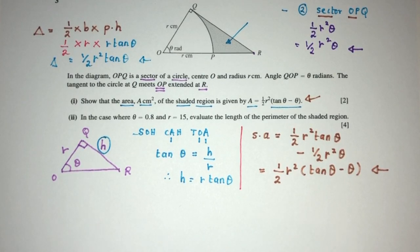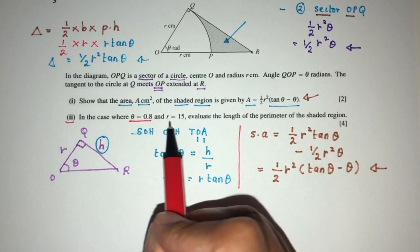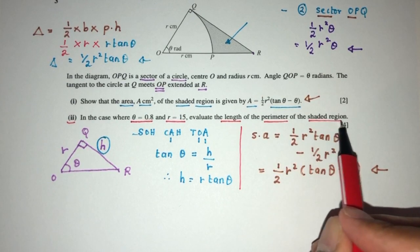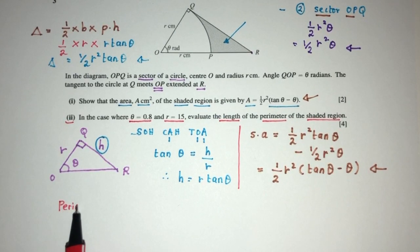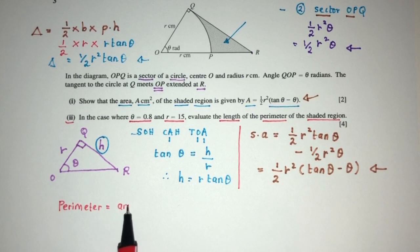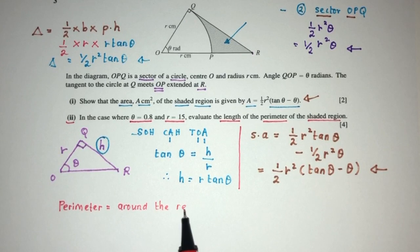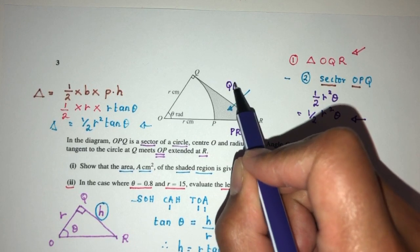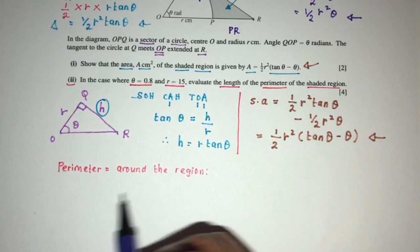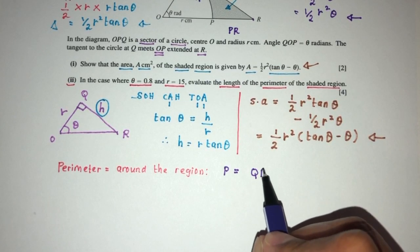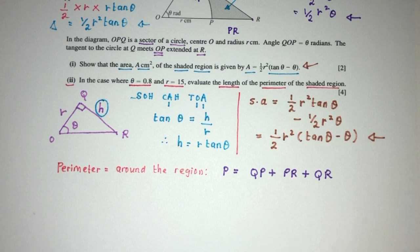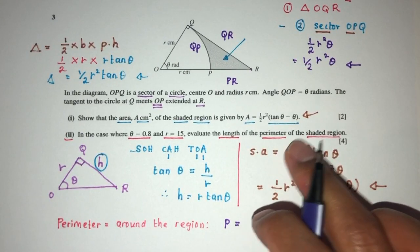Now for part two, in the case where theta equals 0.8 and R equals 15, we have to find the length of the perimeter of the region. Perimeter is the distance around the region that we need to find. We're trying to find the distance around this object, so we're trying to find arc QP, plus PR, plus QR. The perimeter P will be the sum of QP + PR + QR.